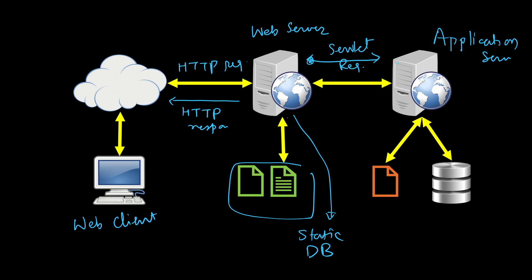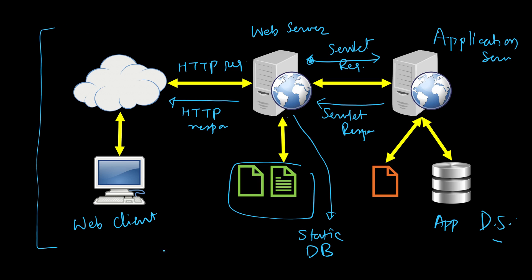The web server sends the servlet request to the application server. The application server contacts the application data store to run the servlet, fetches details, does further processing, and then sends a servlet response back to the web server. Now the web server has the response ready and can send an HTTP response back to the web client. The application server may not always be required — only when intense processing is needed that the web server cannot handle.